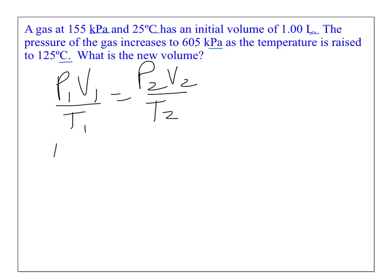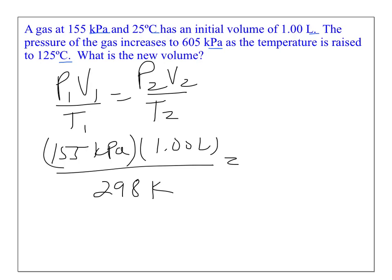So, pressure, 155 KPA. Volume, one liter. The temperature still must be in Kelvin, 298 Kelvin. We're going to 605 KPA. We're solving for the volume, and the temperature has changed to 125 degrees Celsius. That's 398 Kelvin.